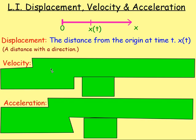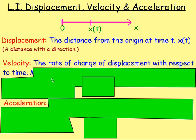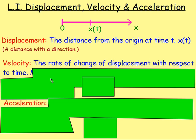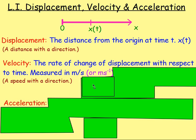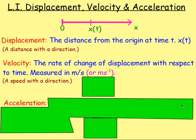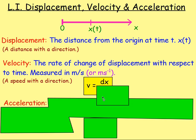Velocity is how quickly your displacement changes. So it's the rate of change of displacement with respect to time. The units you would use to measure that would be metres per second, or ms to the minus 1. Velocity is a vector and it's really your speed with a direction. Because you're looking at how quickly the displacement changes, think rate of change — you can think about differentiation. So the velocity v equals dx/dt.